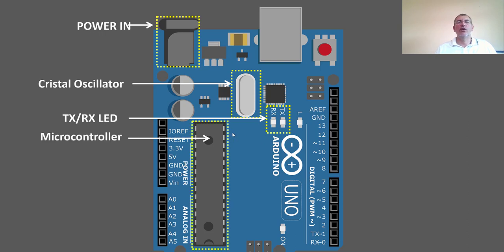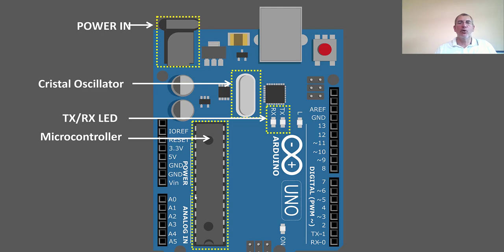A lot of people say the whole board is a microcontroller, but actually the microcontroller is this chip here — the DIP, or dual inline package. Some microcontrollers will have what they call SMD, surface mount device, which doesn't have through-holes like this one. This is the microcontroller, and we'll talk about what's inside it later on.